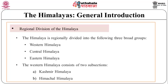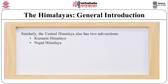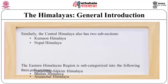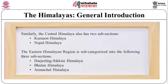According to the regional division, the Himalayas are divided into three broad groups: western Himalayas, central Himalayas, and eastern Himalayas. The western Himalayas consist of two subsections — Kashmir Himalayas and Himachal Himalayas. The central Himalayas has two subsections — Kumaun Himalayas and Nepal Himalayas. The eastern Himalayan region is subcategorized into three subsections: Darjeeling-Sikkim Himalayas, Bhutan Himalayas, and Arunachal Himalayas.